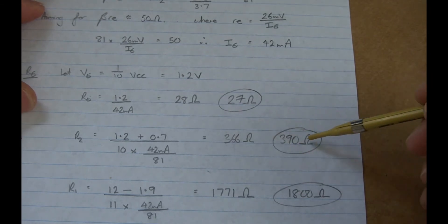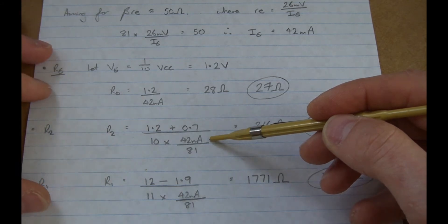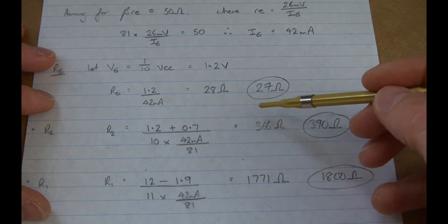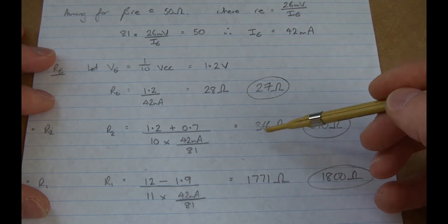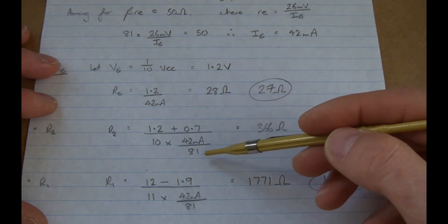Now coming back to here, another rule of thumb is that the emitter current is essentially the same as the collector current. Technically there is a base current difference, but that'll be down in microamps. So for rule of thumb, we can make IE equal IC.